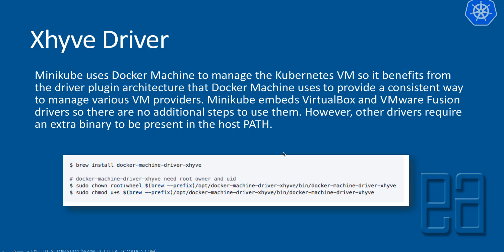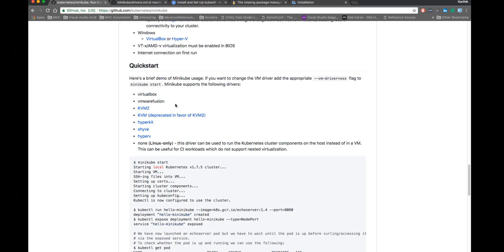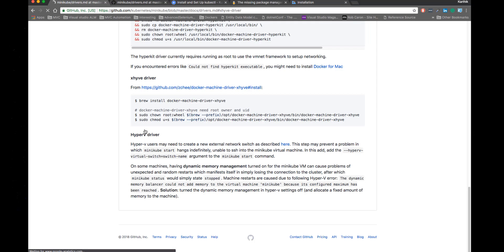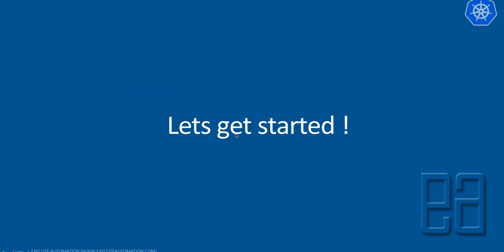Since we're going to use the xhive driver, we need to install it as well. For installing the xhive driver, all you have to do is use this Homebrew command: brew install docker-machine-driver-xhive, and then copy-paste the permission command so that you can get the owner permission for that directory. That's it — that's the only simple thing you need to do. I just copy-pasted the xhive driver instructions from the xhive GitHub URL, where you can find the installation path. Let's quickly see everything in action.